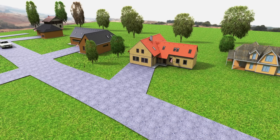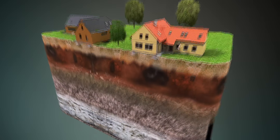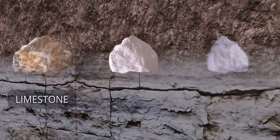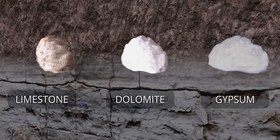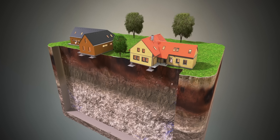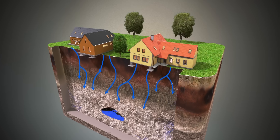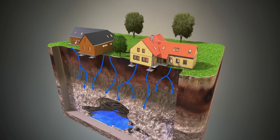Sinkholes almost exclusively form in areas where the rock beneath the topsoil is soluble — for example, limestone, dolomite, and gypsum. Water is the active agent that creates the underground void. This water can come from rain or from broken pipes. Over the years, the soil can get eroded chemically and physically, and eventually a cavern is formed.